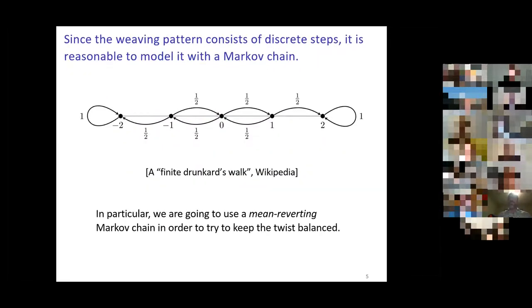Since basically we just decide whether to turn the cards one way or another way, we can model this with a finite random process like a Markov chain. A Markov chain is anything where, depending on where you are—and I'm going to use these numbers here: negative two, negative one, zero, one, two—to indicate twist. Zero is balanced, one is maybe a clockwise twist, negative one is maybe one counterclockwise twist.